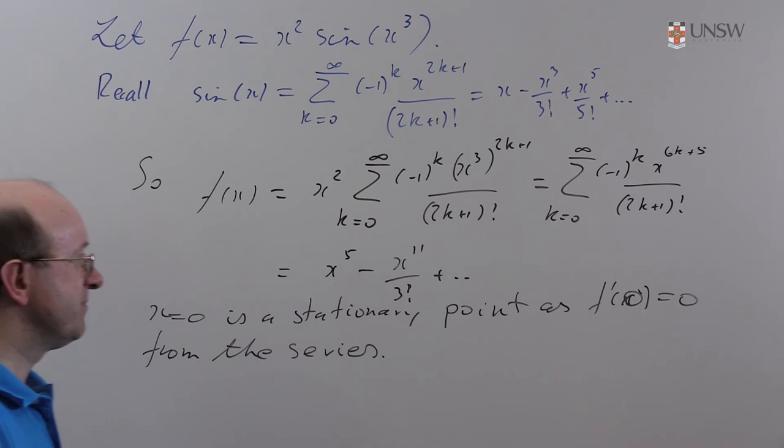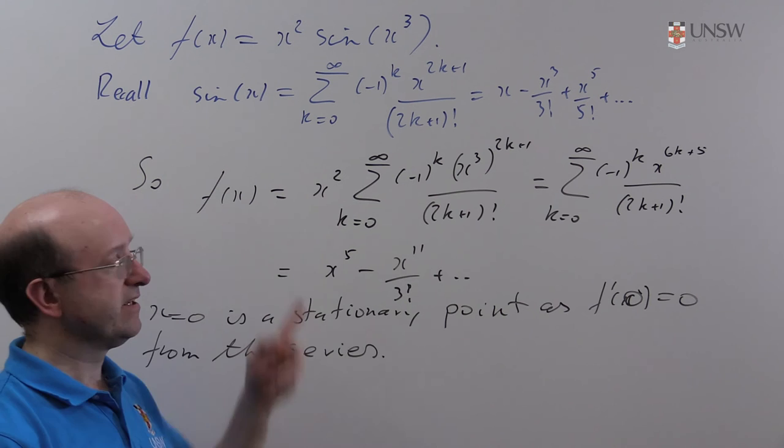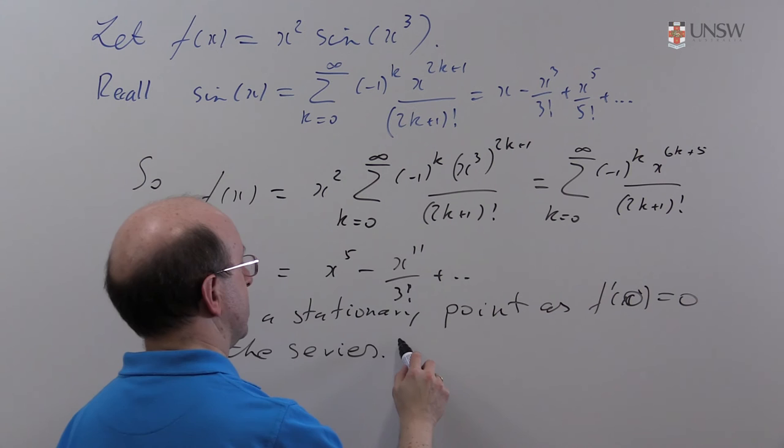The next question to answer is what type of stationary point is it? Is it a minimum, maximum, or inflection point? Well, there's a theorem that tells you what to do here. The first non-zero derivative is power five, and if this is an odd power then you must have a point of inflection.